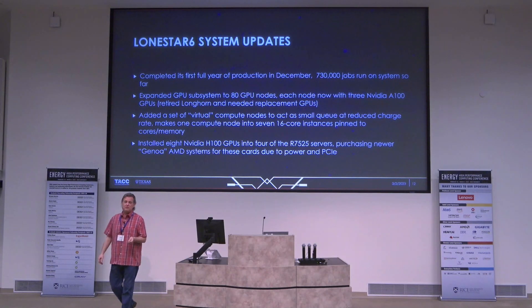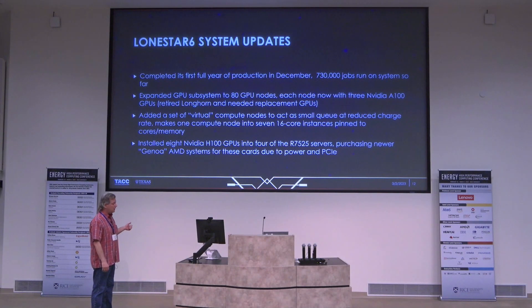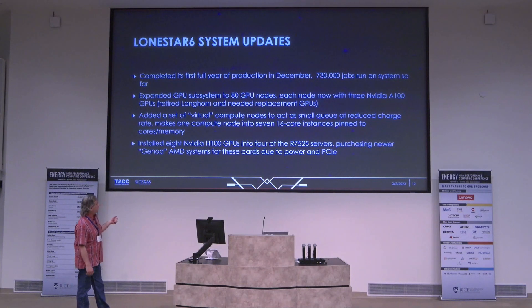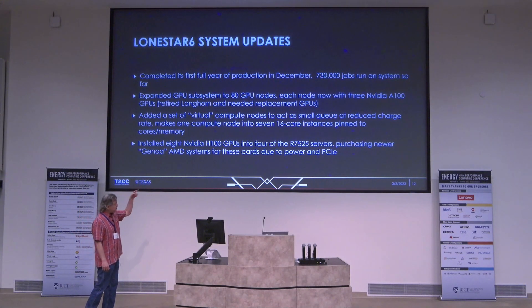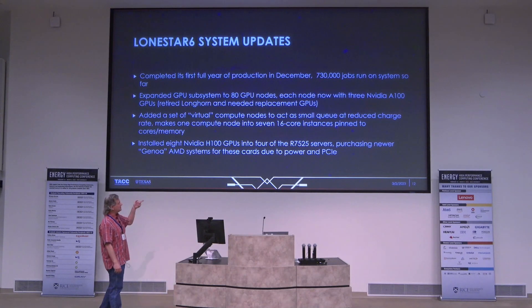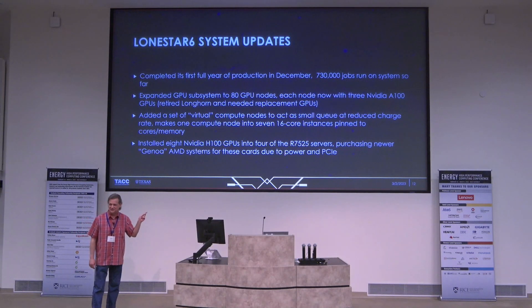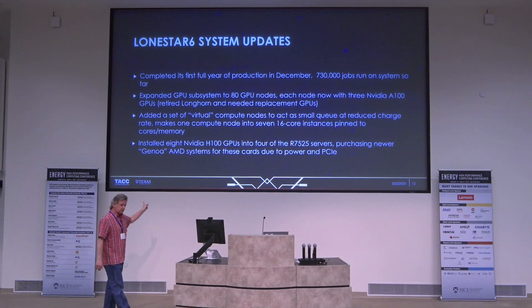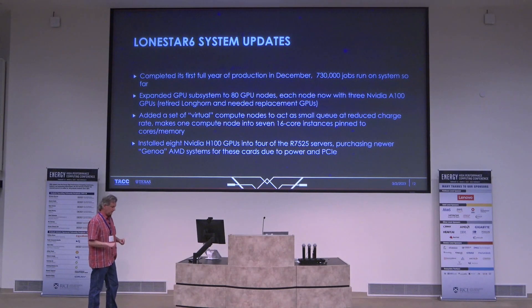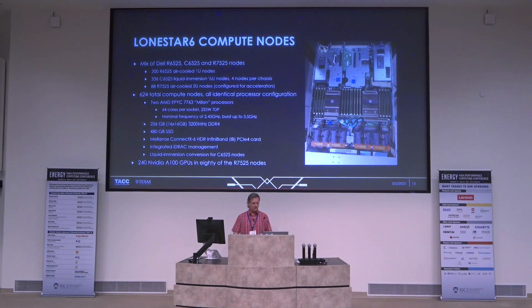We got eight brand new H100s and they are quite impressive. The downside is they didn't get a lot more memory bandwidth — about a 30% improvement compared to the A100s — but the core count and flops are almost double what the A100s provide. One challenge is these GPUs are PCIe gen 5 while our old servers are gen 4, and our servers weren't designed to deliver the power needed — they'll only run up to about 310 watts per card and the cards need 350 watts each. So we just purchased new Genoa servers with PCIe gen 5 and more power delivery so we can install the H100s and get full power out of them.